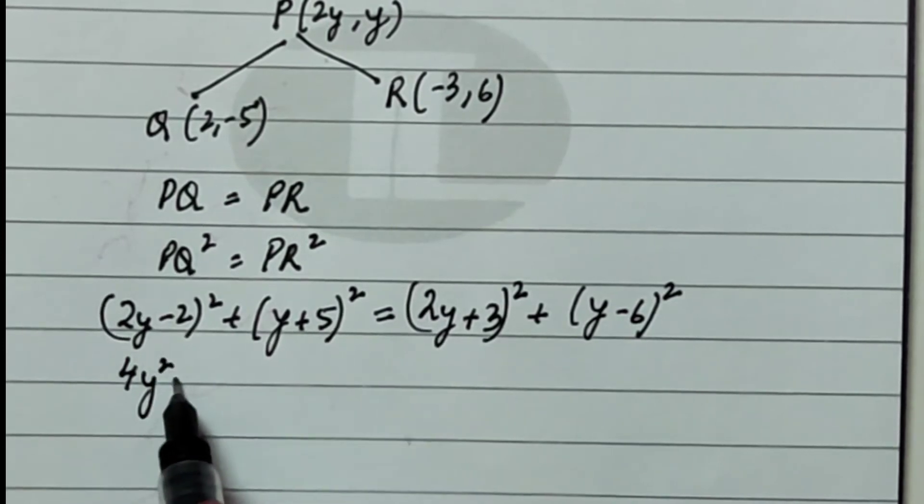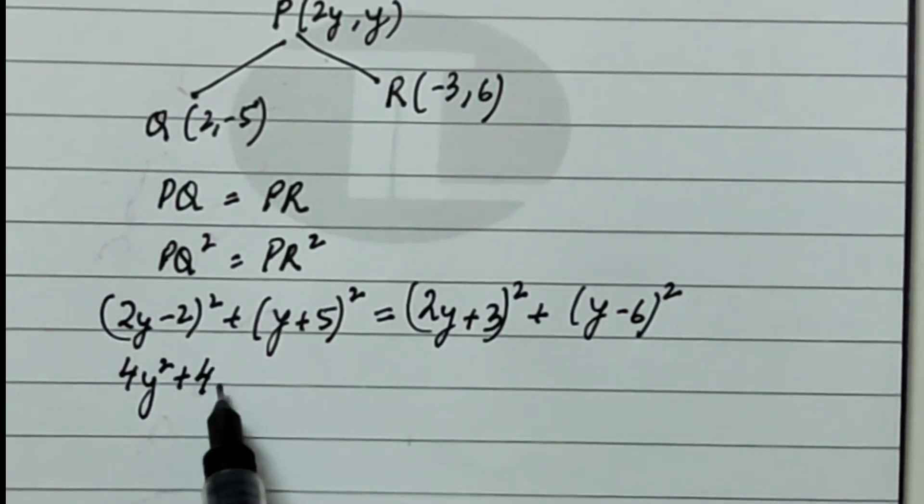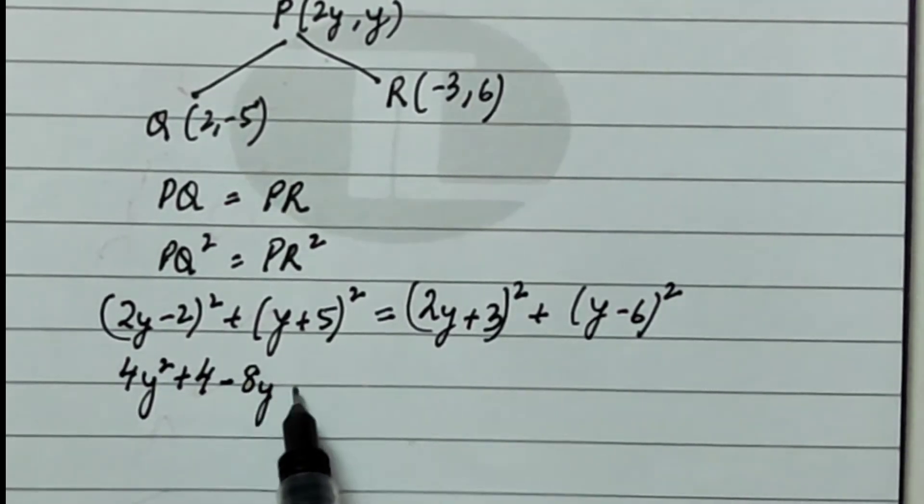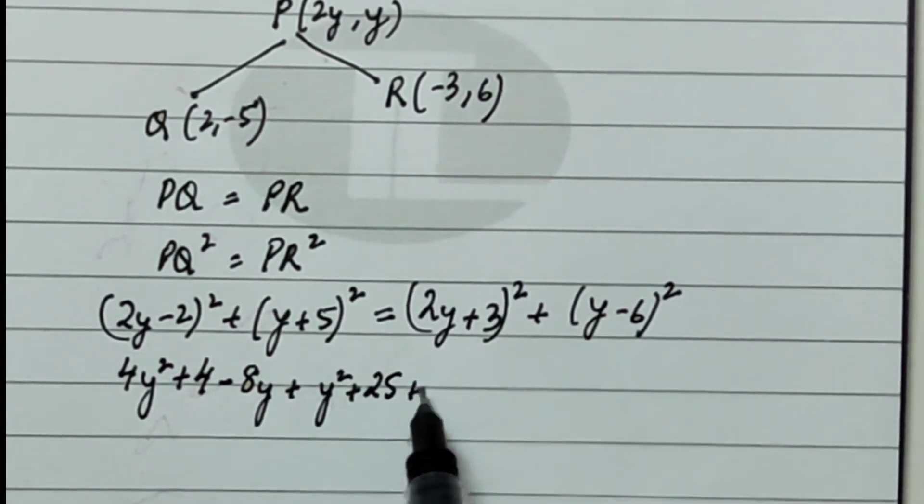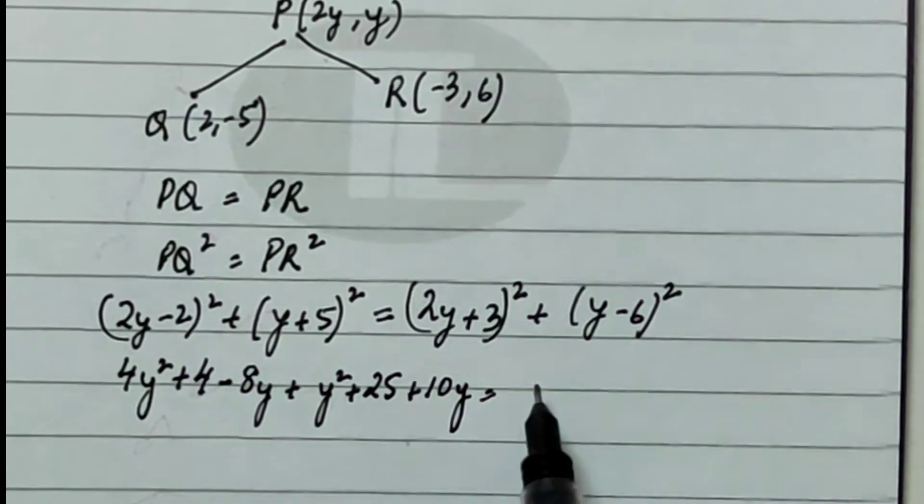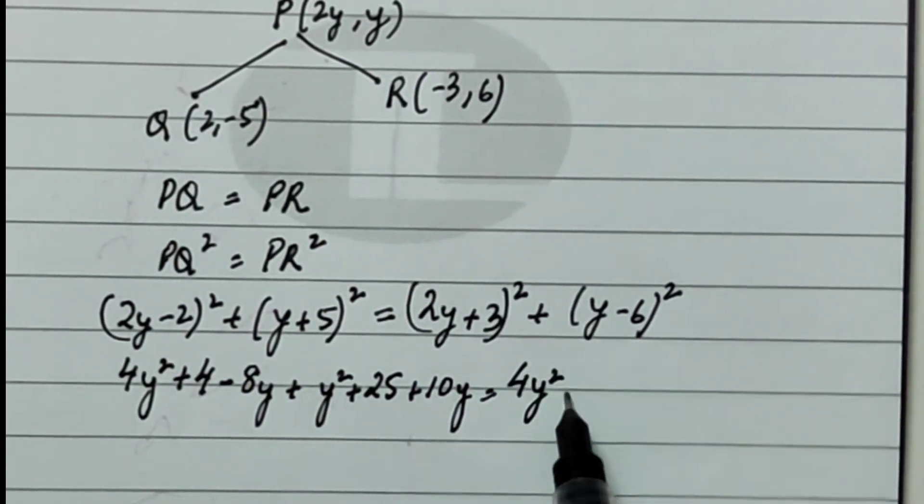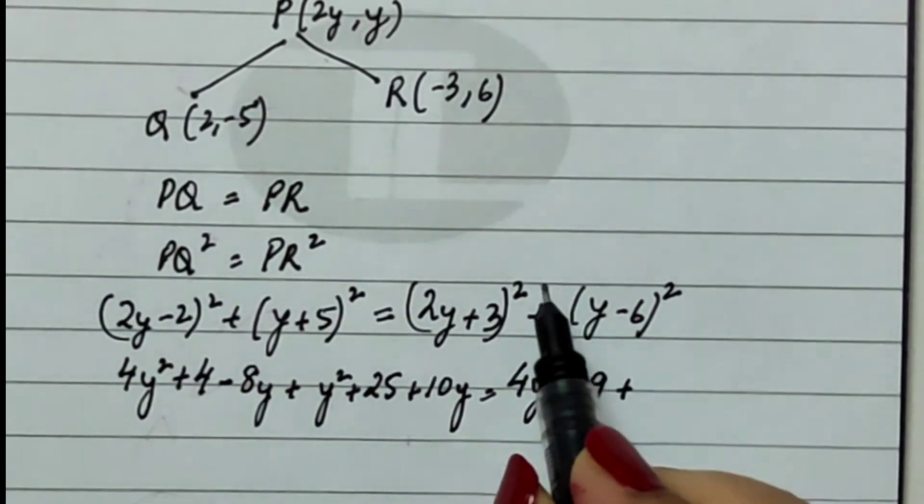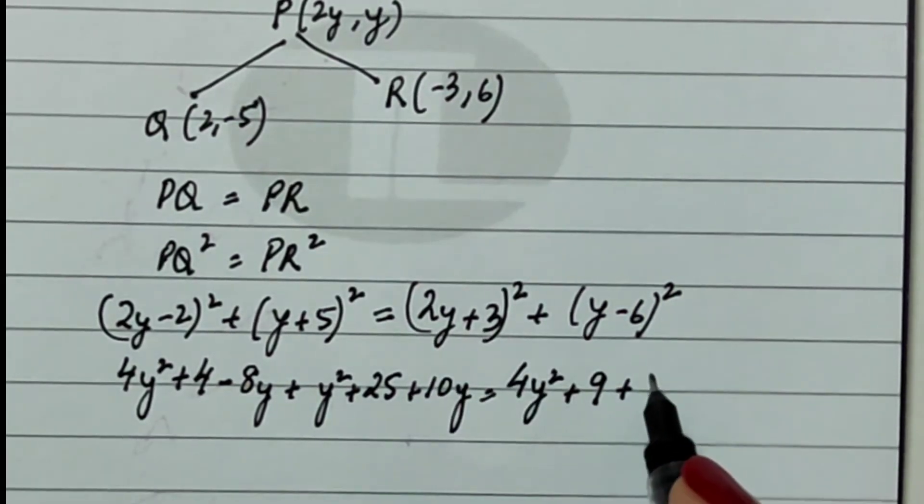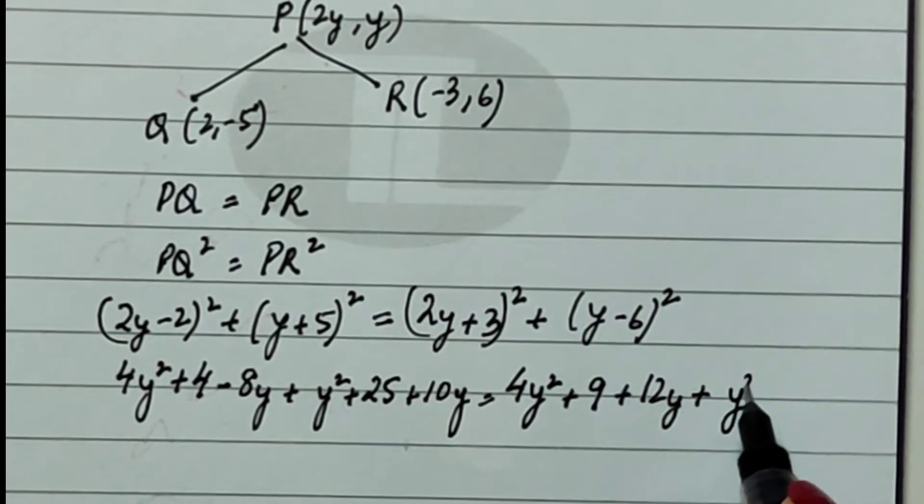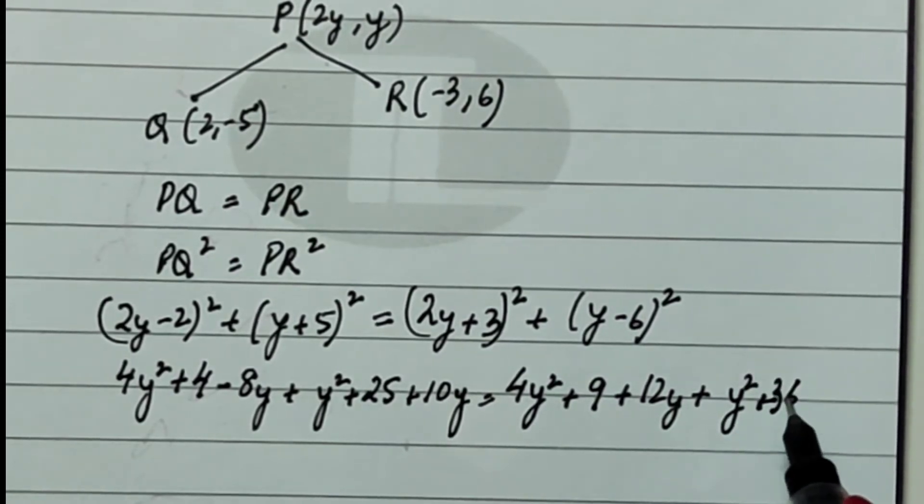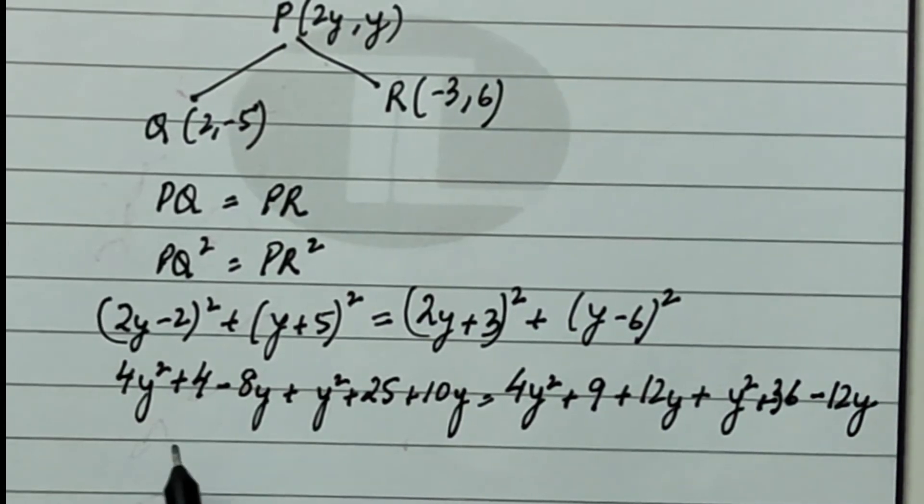That gives me how much? 4y² + 4 - 8y + y² + 25 + 10y is equal to 4y² + 9 plus 2 into 2y into 3. That means it comes out to be 12y + y² + y² + 36 - 12y. Let's try to simplify this.